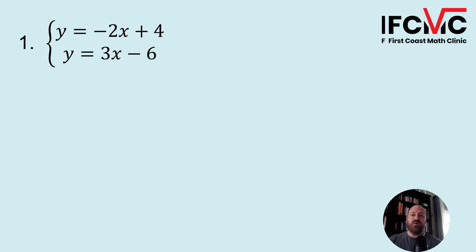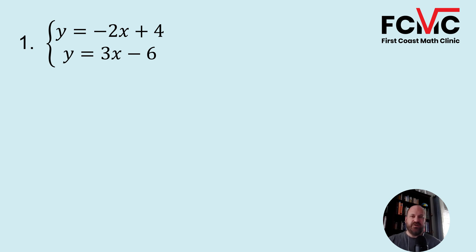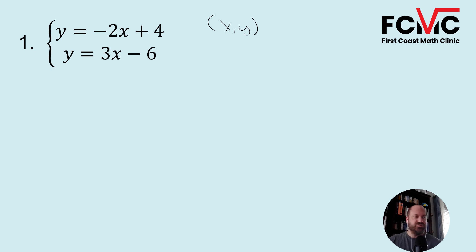So our system for number one, we've got y equals negative 2x plus 4, and y equals 3x minus 6. We know a system is basically just multiple equations representing the same quantity, and our solution is going to take the form x, y — so we're going to get an ordered pair for our solution.